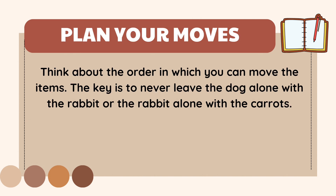As we understand the problem, we move to the next step: plan your moves. In order to solve this problem, we need to plan our moves so the rancher does not have trouble crossing the river. Think about the order in which you can move the items. The key is to never leave the dog alone with the rabbit or the rabbit alone with the carrot.